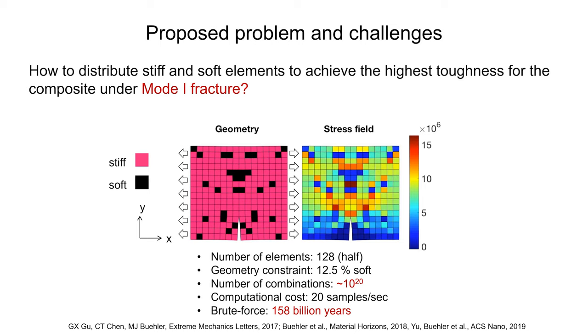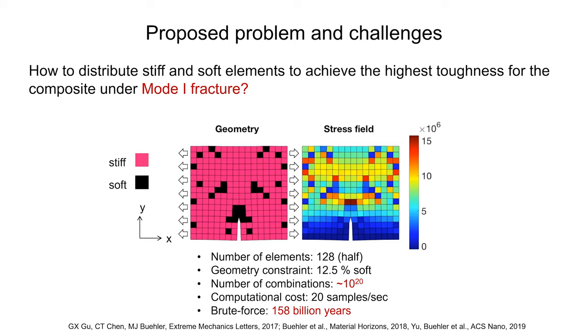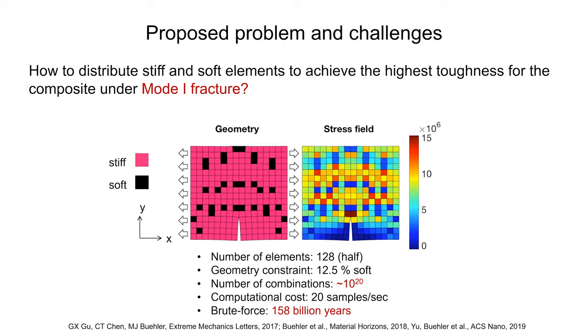Nature solves this problem by using a combination of disparate properties — a very stiff material and a very soft material — creating patterns of stiff and soft. In bone, for instance, we have a protein called collagen, which is very soft, and a very brittle, very stiff material called hydroxyapatite. By distributing these contrasting materials in patterns over space, we can create advanced material properties like very high toughness. The problem is how do we find these optimal distributions? Nature does it through evolution, but it takes millions and billions of years — we don't have as much time.